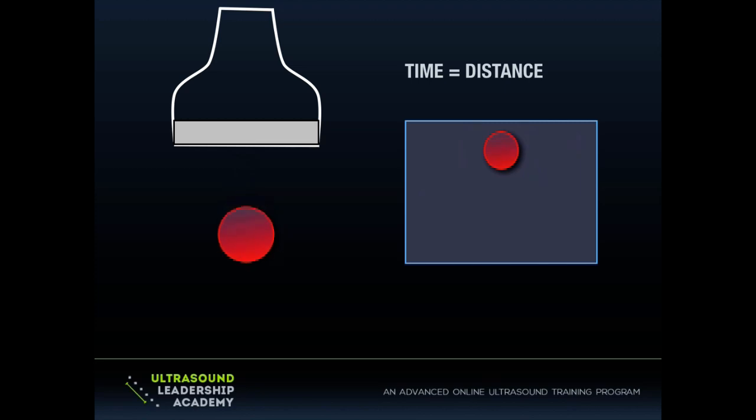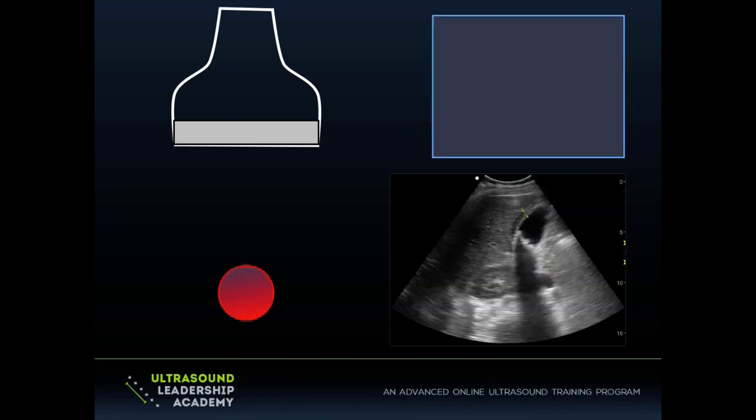Now, contrast that if we move the object down and pulse. The pulse comes out, and we're waiting, and we're waiting, and it comes back. And that long time of flight tells the machine that that object must be further away. And as a result, in this case, it gets displayed in the far field. So we know that time equals distance. We know that structures deep on the screen must be further away from the ultrasound probe, and that makes sense.